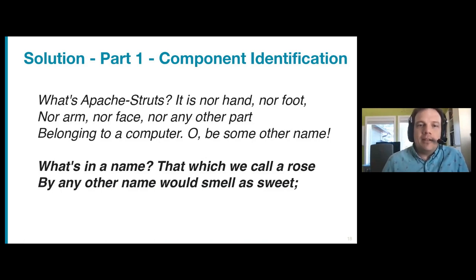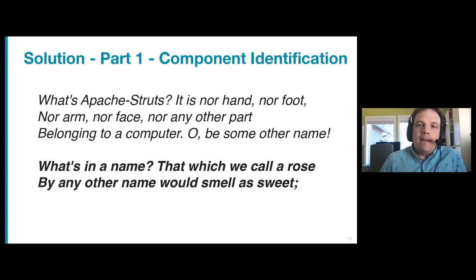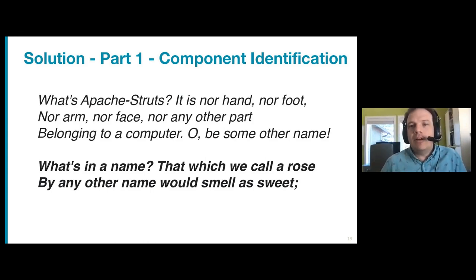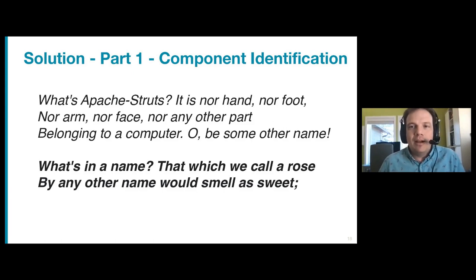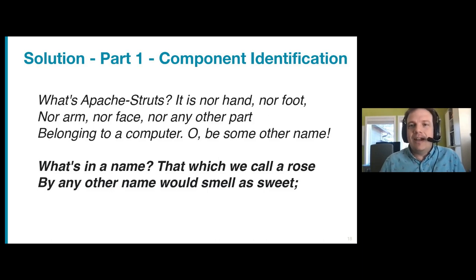Here's a bit of Shakespeare: "What's Apache Struts? It is not hand, nor foot, nor arm, nor face, nor any other part belonging to a computer. Be some other name. What's in a name? That which we call a rose by any other name would smell as sweet." Suppose you have Apache Struts in your system, but it's been renamed — or perhaps a 50% subset of Apache Struts was copy-pasted and then that partial copy got renamed too. You're still vulnerable, but because it's been renamed, you won't necessarily be able to generate an SBOM and cross-check against the vulnerability database.